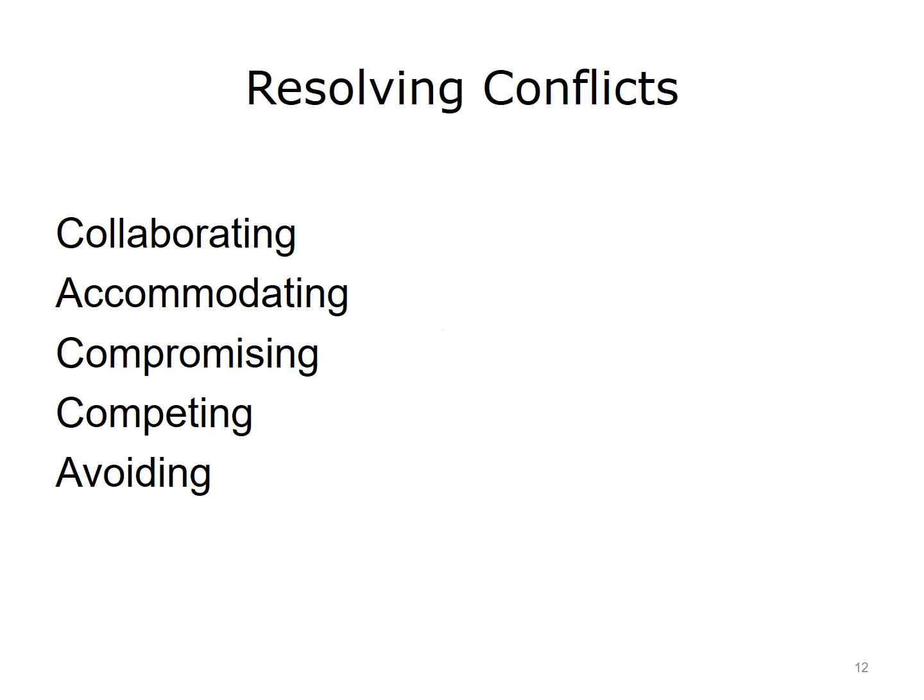Finally, you may decide to use avoidance strategies, such as retreating, circumventing, or delaying an issue, if the current time or place is not appropriate for resolving the conflict directly. Avoidance may be your best option when the issue is not critical, relationships are more important than the outcome, tempers are rising, other problems need to be addressed, losing is inevitable, you are emotionally invested, others are better suited to fight the battle, or you simply need more information. It is important to understand that postponing conflict sometimes can make matters worse.